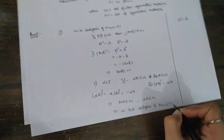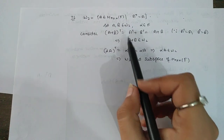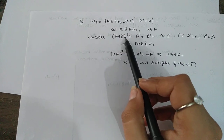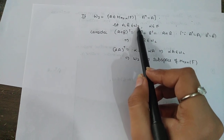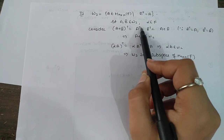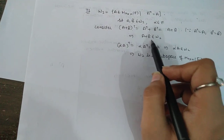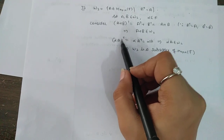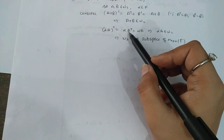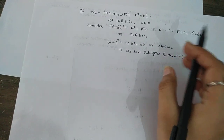Similarly, for W2, the set of all symmetric matrices where A transpose = A, we prove it is also a subspace of M_{n×n}(F). For closure under addition: if A and B are in W2, then (A + B) transpose = A transpose + B transpose = A + B, so A + B is in W2. For scalar multiplication: (alpha·A) transpose = alpha·(A transpose) = alpha·A, since A belongs to W2. So alpha·A is also in W2. Therefore W2 is a subspace of M_{n×n}(F).